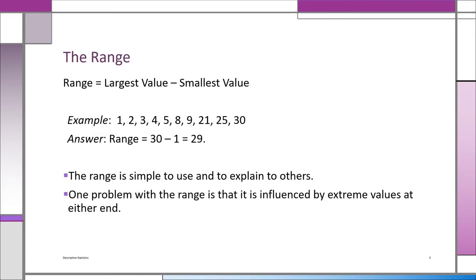The first measure of dispersion is the range — it's the obvious one. You don't need to be a statistician; you can even explain this to your boss. The range is just the largest value minus the smallest value. Looking at the data, 30 minus 1 is 29. You don't need to know the center of the data or how many items you have — just the largest and the smallest. Easy to explain, anyone can understand it. That's a huge advantage.